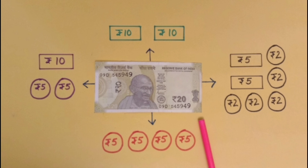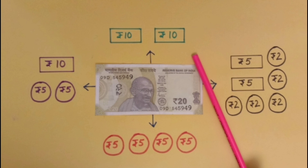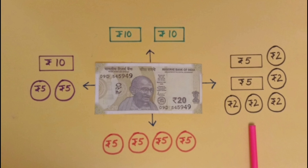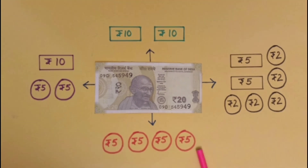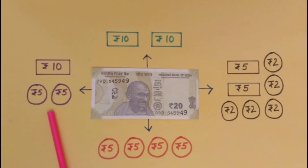In the same way, we can also draw different notes and coins for rupees 20. Here we have drawn 2 notes of rupees 10 in place of rupees 20. Two notes of rupees 5 and 5 coins of rupees 2 together are also equal to the value of rupees 20. You can also draw 4 coins of rupees 5 for rupees 20. If we draw 1 note of rupees 10 and 2 coins of rupees 5, they will also be equal to rupees 20.